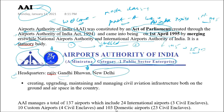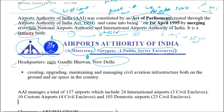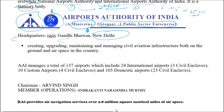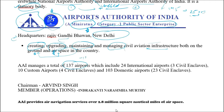The main function of Airports Authority of India is creating, upgrading, maintaining, and managing the civil aviation infrastructure - both on the ground and in the airspace of the country. Airspace management and ground aviation infrastructure are the key responsibilities.